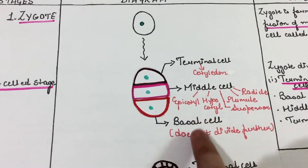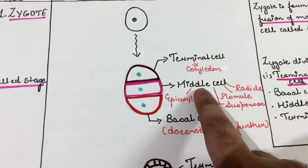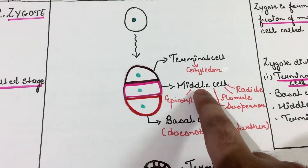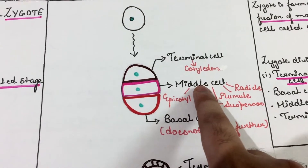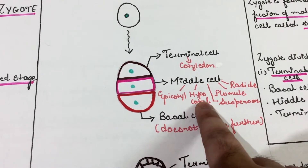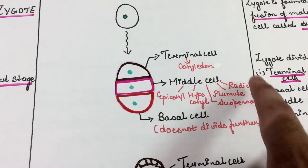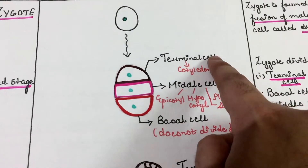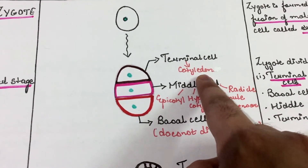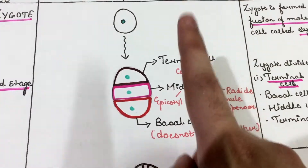The basal cell does not divide further, and the middle cell gives rise to most of the embryo. The parts of the embryo formed from the middle cell are the epicotyl, hypocotyl, suspensor, plumule, and the radicle. The terminal cell forms the cotyledon. In monocots, there is only one cotyledon.